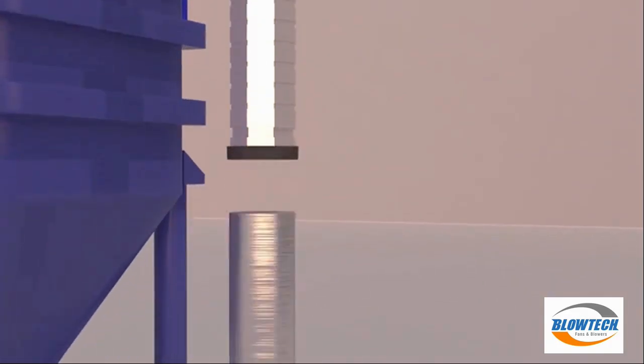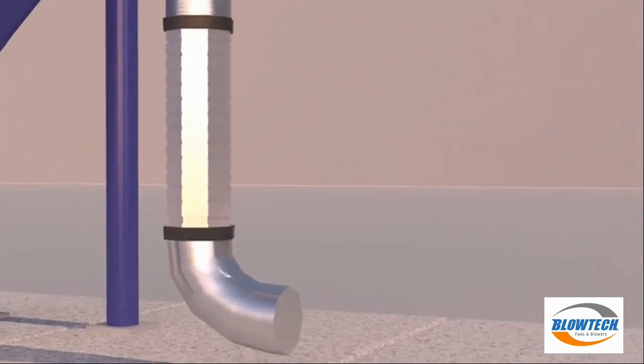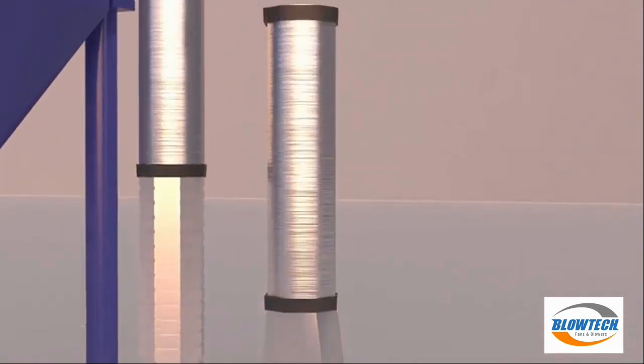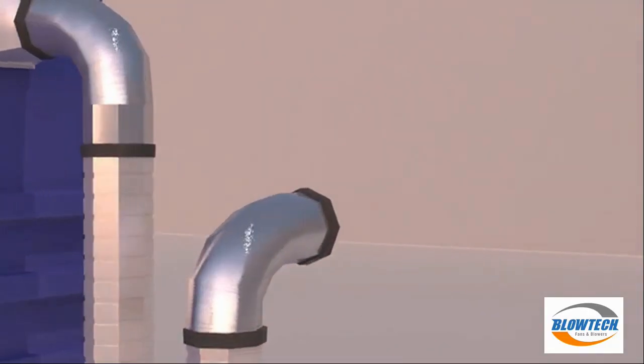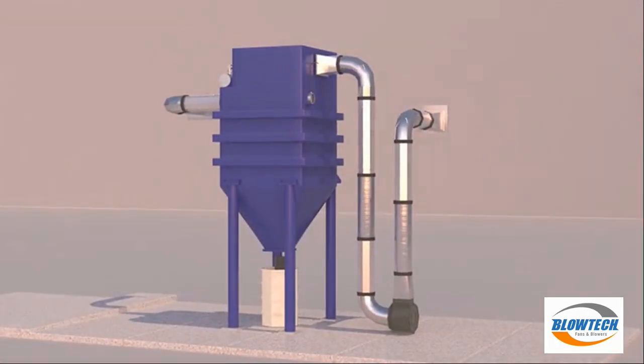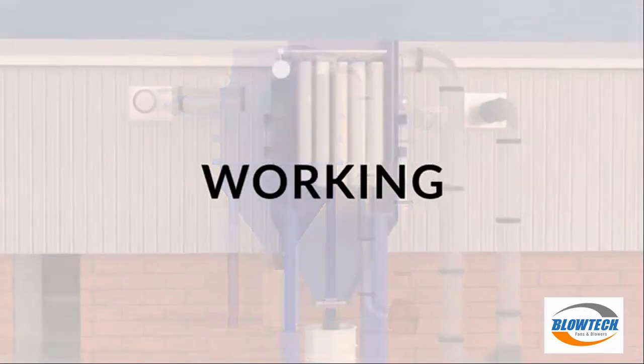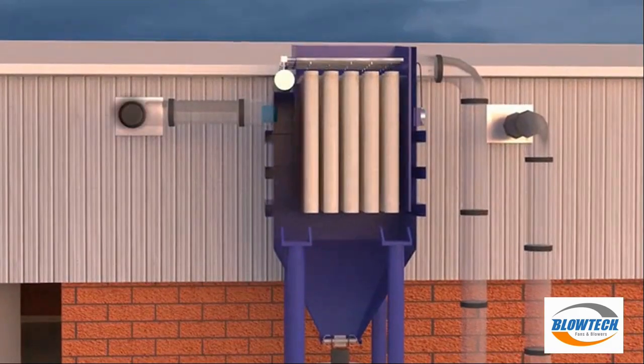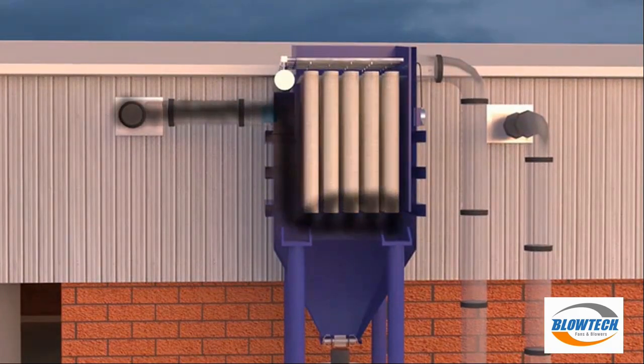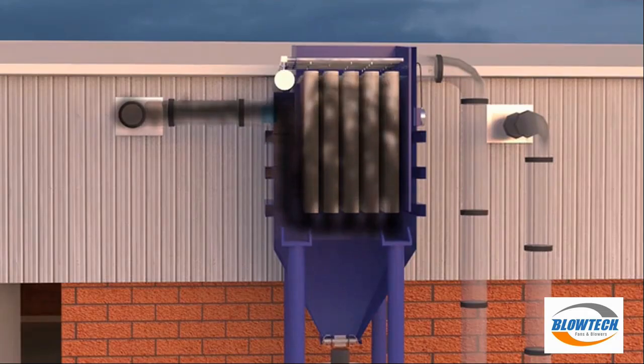These pipes are used to carry the filtered air. Now let's understand how this works. Working: The contaminated air enters the system through the inlet.